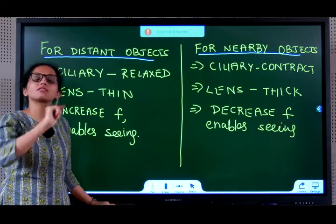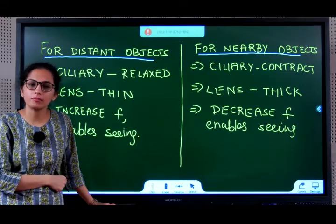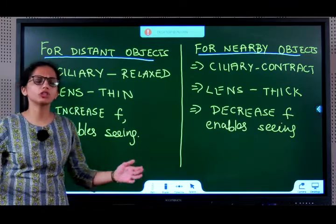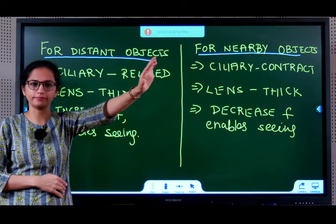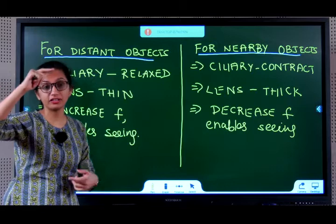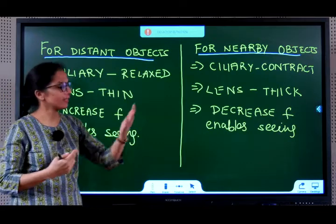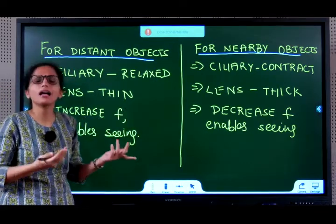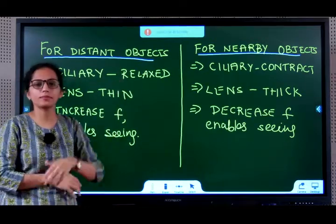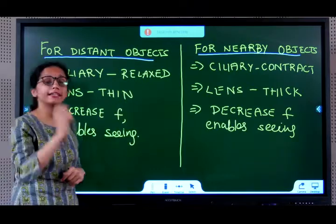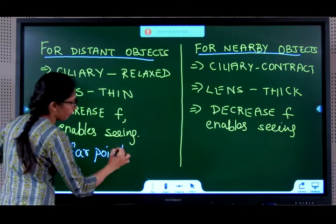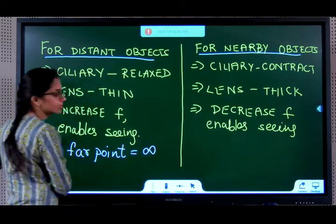Which is the maximum distance for which you can see an object with your normal eye? It is infinity. You can go to an ocean and see forever till the end of it. If the earth was flat, with no obstacles, we could see till infinity. I can't see beyond this room only because the wall is an obstacle. The far point of a normal eye is infinity.